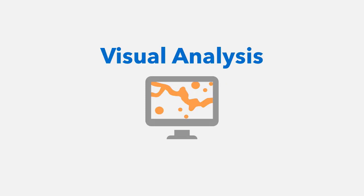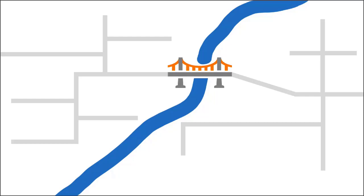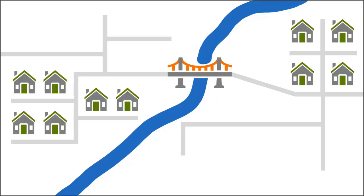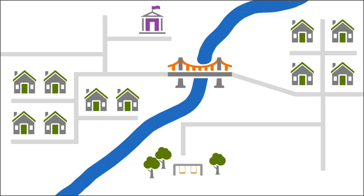We can use visual analysis to understand the location of things. For example, a small town is located near a large river. It has several different roads and even a bridge to cross the river. The residents of the town live in houses found along these roads. The town also has amenities such as a park, school, store, and hospital.